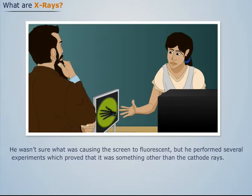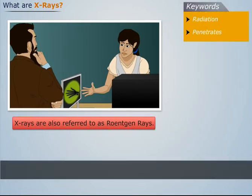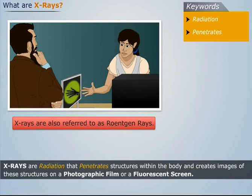Sometimes X-rays are also referred to as Roentgen rays. Thus, we can say that X-rays are radiation that penetrates structures within the body and creates images of these structures on a photographic film or a fluorescent screen.